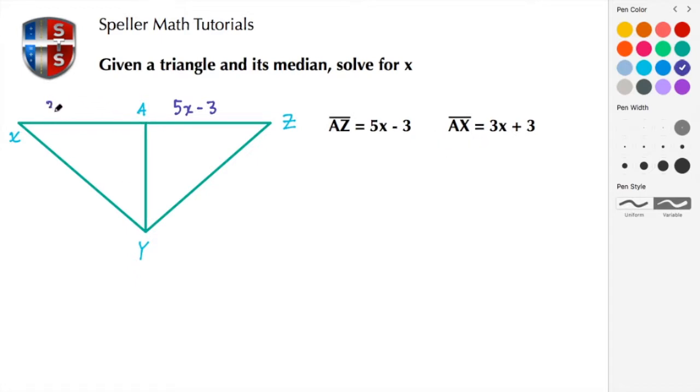We're told that we're given a median, so with that information we know that the length of AX is congruent to AZ. So we're going to set these two expressions equal to each other and then we're going to solve for x.